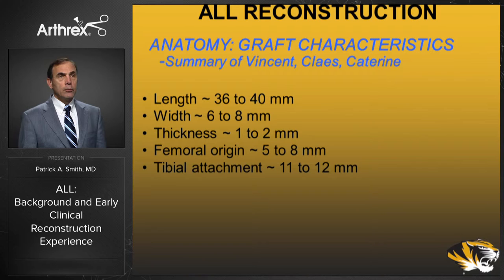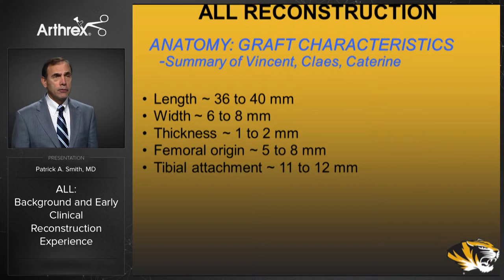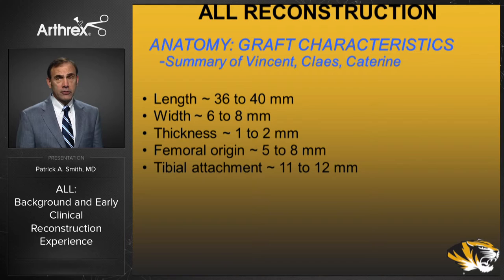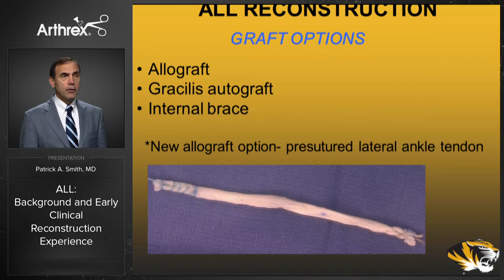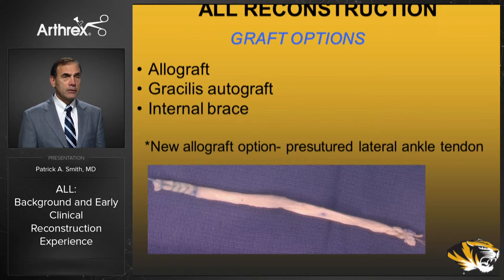Regarding the graft we use, we need to reproduce the anatomy. The ALL length is approximately 36 to 40 millimeters, width six to eight millimeters, and thickness only one to two millimeters — it's a small capsular ligament. The femoral attachment is five to eight millimeters and the tibial attachment is broader at 11 to 12 millimeters. I used allograft; a gracilis autograft is an excellent choice; an internal brace may also be an option. The newest option I like is a pre-sutured lateral ankle tendon allograft from Arthrex — cheaper, pre-stitched on one end, and works very well for the ALL.